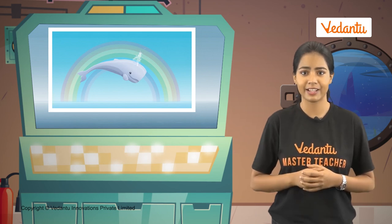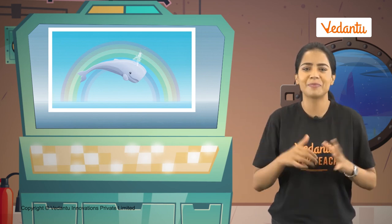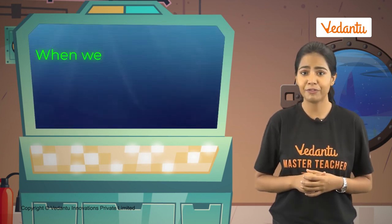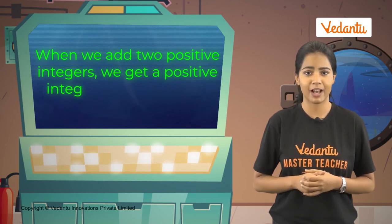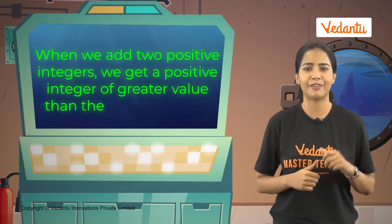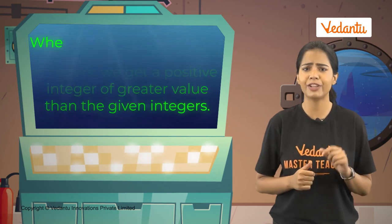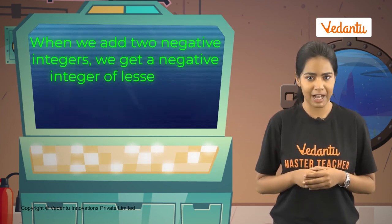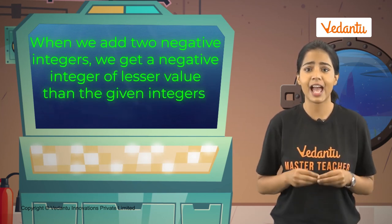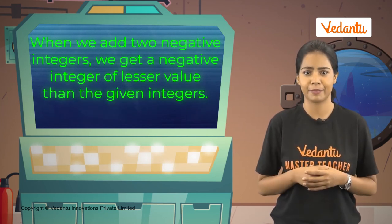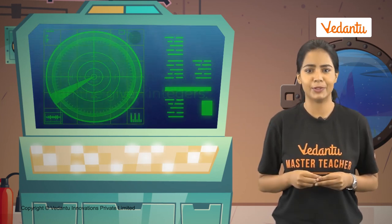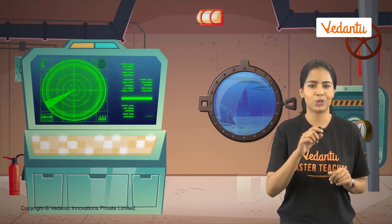Today was a wonderful day. We saw a super rare sight and also learnt a lot about adding integers. Let's recap what we learnt. When we add 2 positive integers, we get a positive integer of greater value. When we add 2 negative integers, we add them but the answer takes a negative sign, giving us a value even lesser than both the original values.